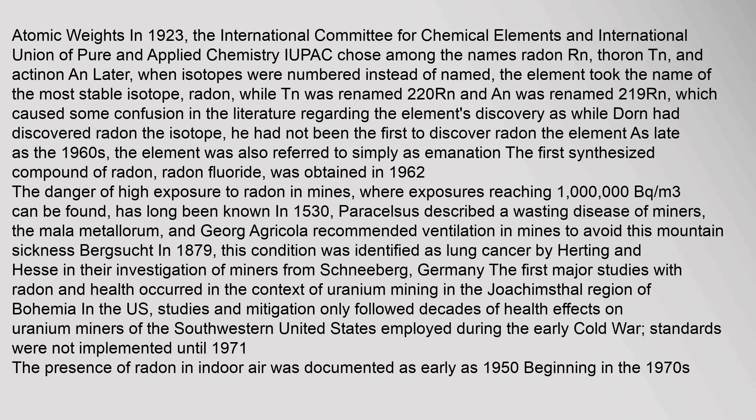In 1923, the International Committee for Chemical Elements and IUPAC chose among the names radon (Rn), thorin (Tn), and actinon. Later, when isotopes were numbered instead of named, the element took the name of its most stable isotope, radon, while Tn was renamed 220Rn and actinon was renamed 219Rn. As late as the 1960s the element was also referred to simply as 'emanation.'